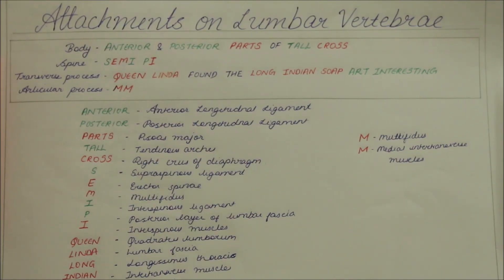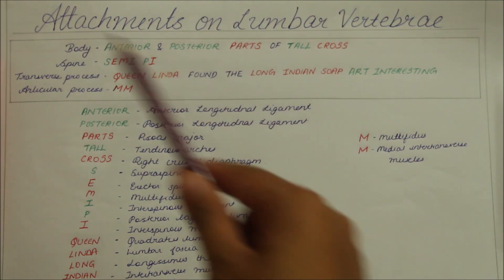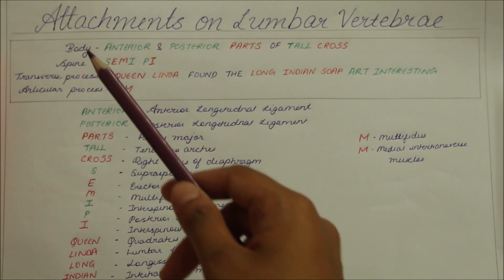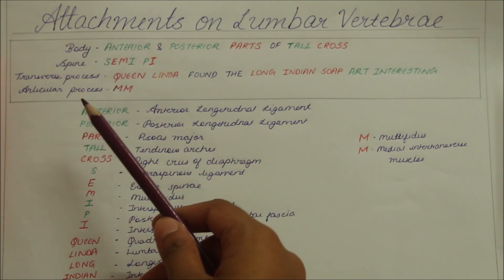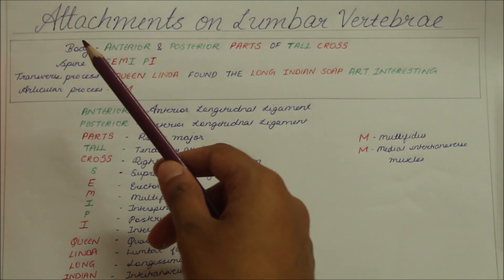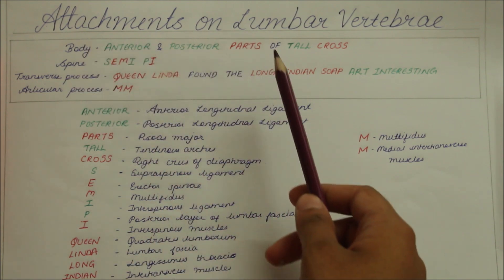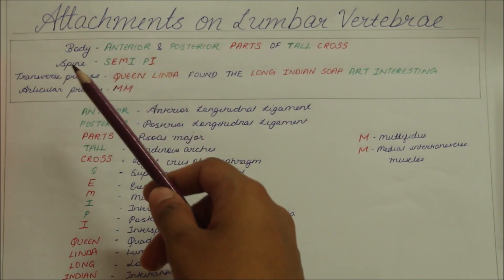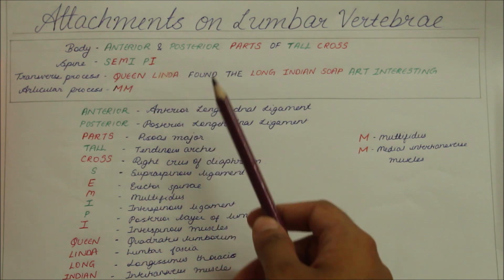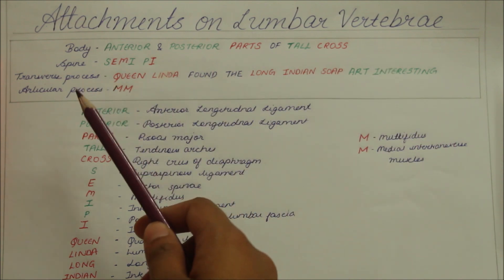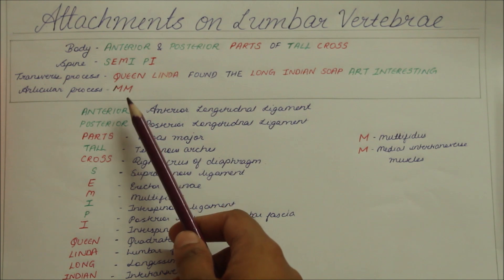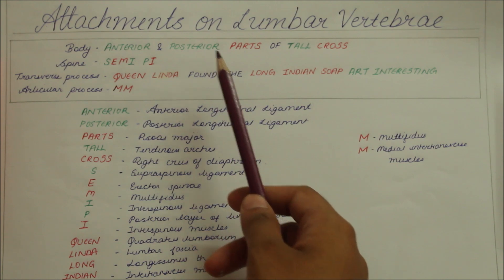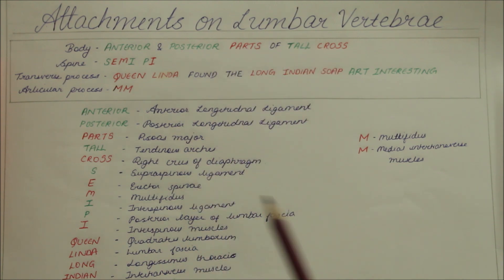Now let's look at an easy way to remember the attachments on the lumbar vertebrae. I have made four different mnemonics for the four different parts: the body, spine, transverse process, and articular process. The mnemonic for the body is 'Anterior and Posterior Parts of Tall Cross.' For the spine, we have 'Semi-Pie.' For the transverse process: 'Queen Linda Found the Long Indian Sore Part Interesting.' For the articular process, we have 'MM.' Note that green indicates ligament attachments and red indicates muscle origins.